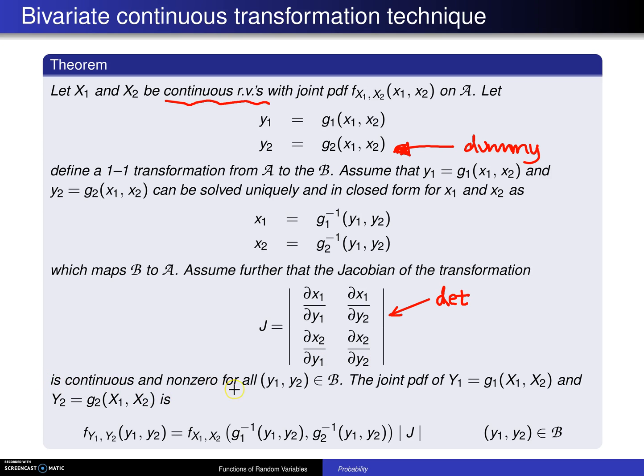Be continuous and non-zero for all y1, y2, an element of script B. Then the joint PDF of Y1 equals g1 of x1, x2 and Y2 equals g2 of x1, x2 is. And this looks exactly the same as before, except for one exception. You have the absolute value of the Jacobian thrown in. So keep in mind those bars right there are absolute value bars for y1 and y2, an element of script B.